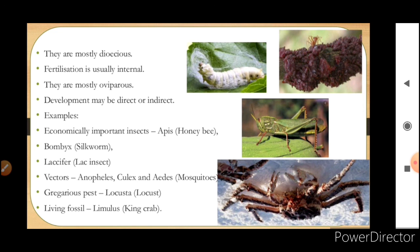Examples include economically important insects like Apis (honeybee), Bombyx (silkworm), and Laccifer (lac insect, which produces lac). Vectors include Anopheles, Culex, and Aedes mosquitoes — Anopheles is responsible for malaria. Gregarious pests are Locusta (locust), which eat any plant or organism. The living fossil is Limulus, called the king crab, which has a very long lifespan.